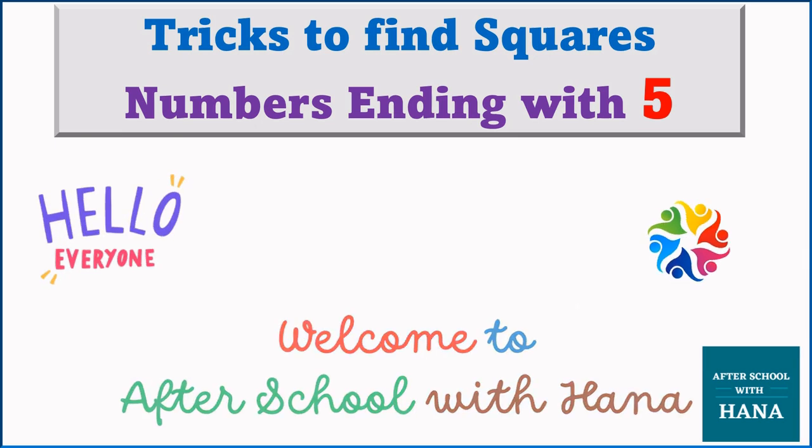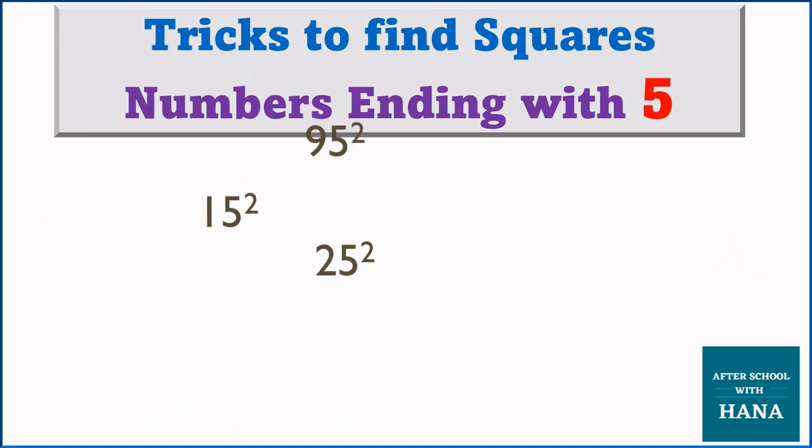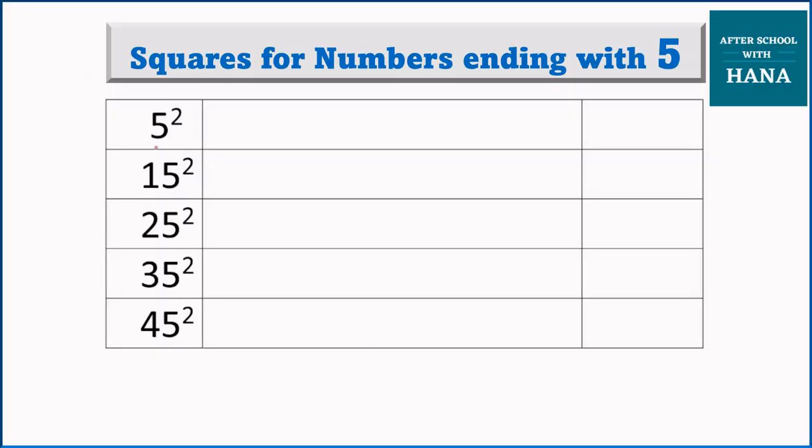Hello everyone, welcome to After School with Hannah. Today we will learn tricks to find squares of numbers ending with 5. Let's start. We have here 5 squared. What is 5 squared? 25. 5 multiply by 5 is 25. Always remember one thing: all the numbers that end with 5, their squares will end with 25. So the last two digits will be 25.